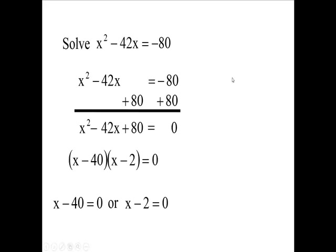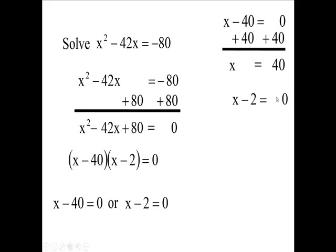Now, if you have x minus 40 is zero, copy that up here and add 40 to both sides of your equation. You're going to have x is 40. So that takes care of this one. Now, how about this one? Here we add two, and we're going to get x equals two. So my two answers are x equals 40 and x equals two. We have solved this equation.